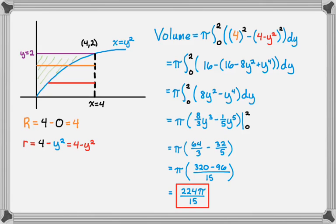So that's two examples of going around vertical axes. The main difference is that you have to solve your equations for x instead of being solved for y. Hope you found this helpful. Good luck.